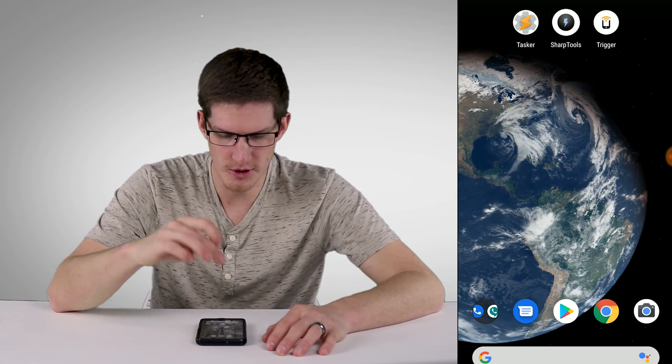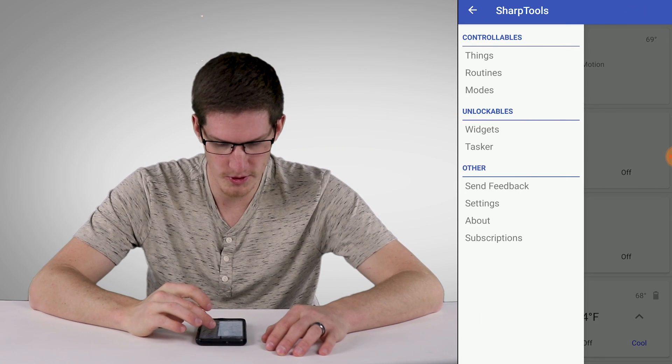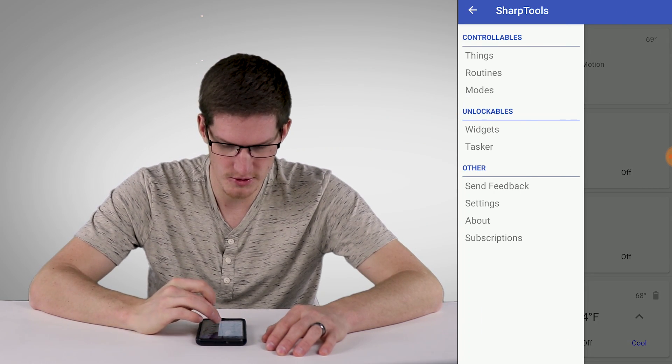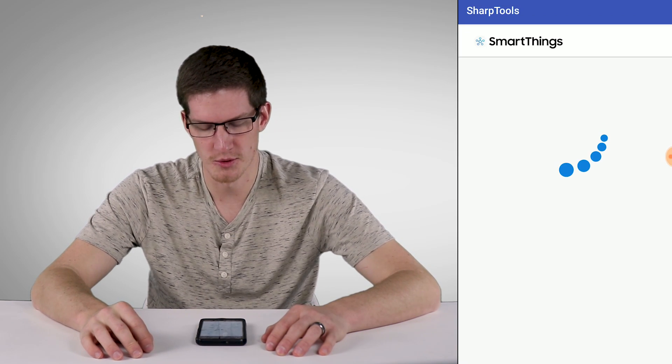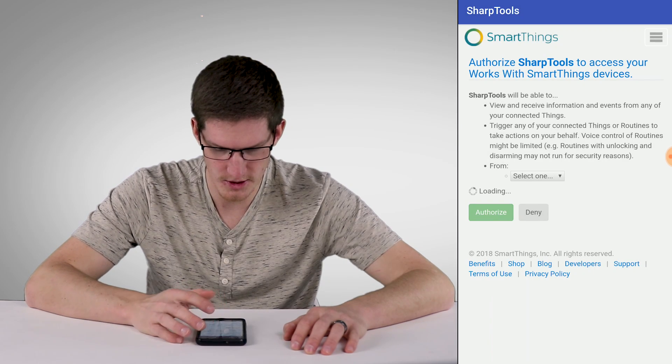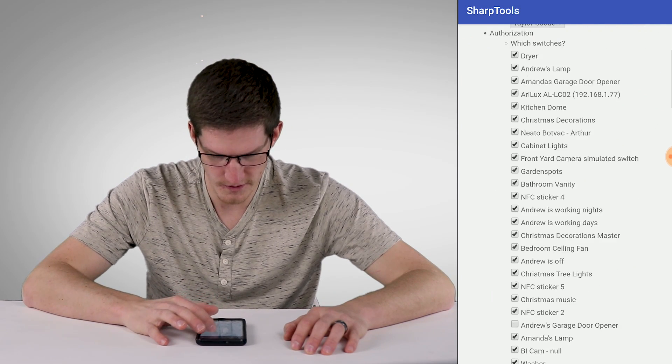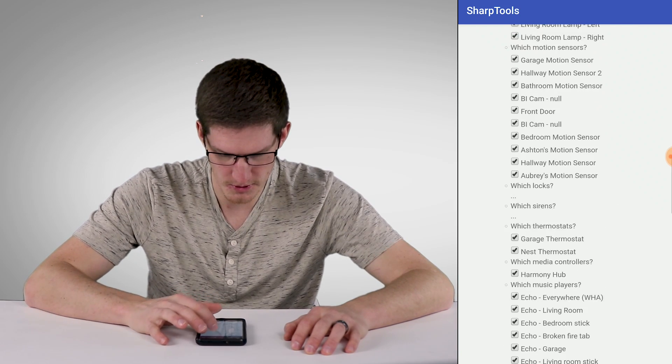So the first thing we're going to need to do is jump into Sharp Tools, and we're going to need to set up our hub with Sharp Tools. If we go into settings, we can authorize things right at the top there. This will take us to our SmartThings login. Once you're logged into SmartThings, just select your hub name, select all of your devices or whichever devices you want this to be able to work with.